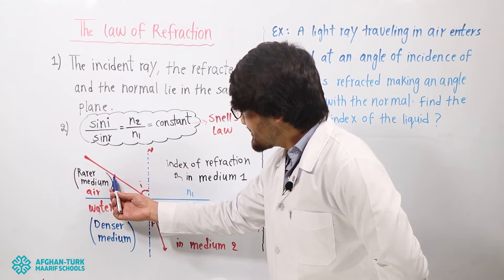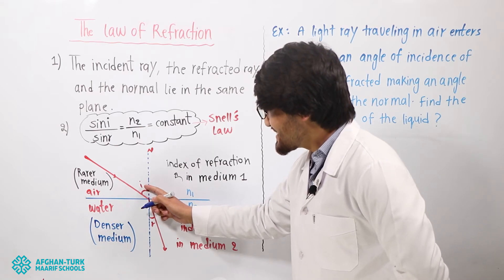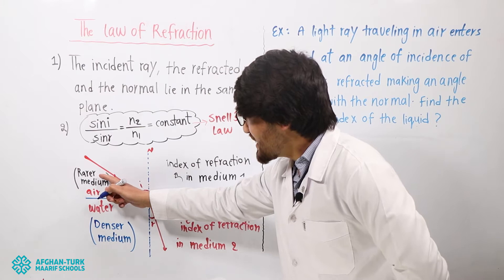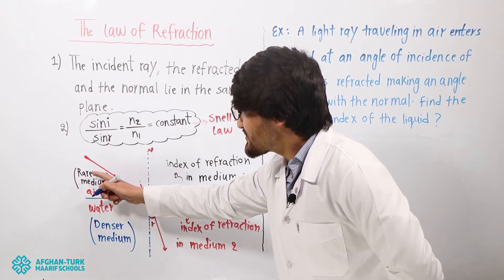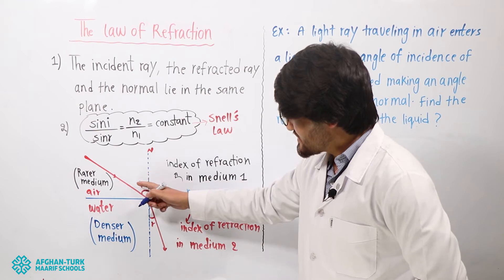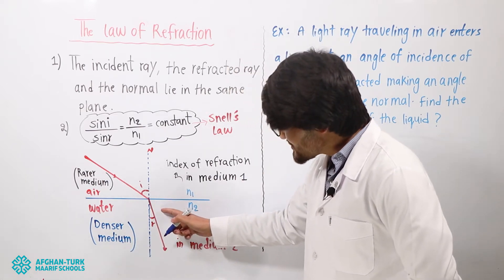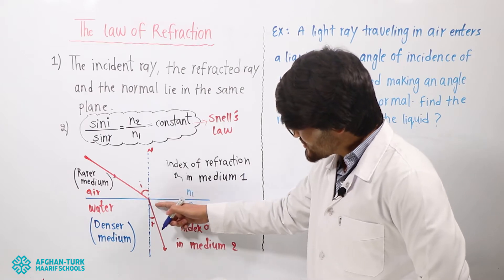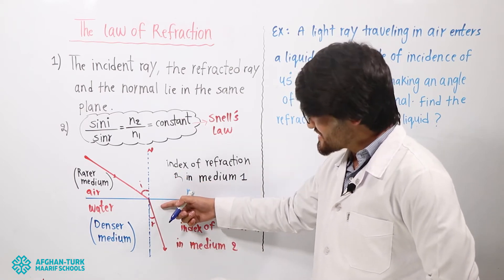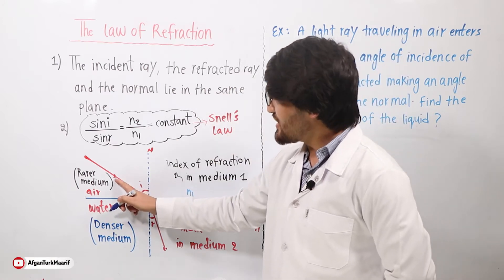This is the incident ray. The incident ray makes an angle with the normal. This angle is called the angle of incidence, i. When light travels from a rarer medium — for example, air — to a denser medium like water, the light changes its direction. We can say the light bends, or the light is refracted. This ray is called the refracted ray, and this is the incident ray.